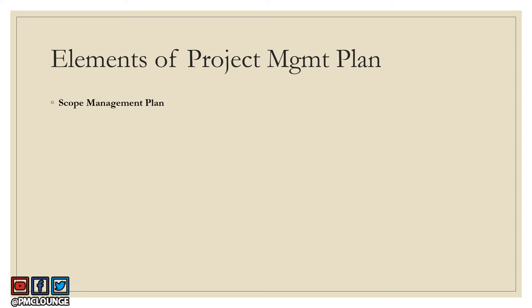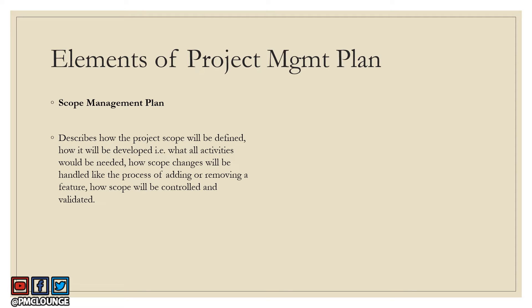Starting with the scope management plan, which is the output of the plan scope management process. This document describes how the project scope will be defined, how it will be developed — meaning what activities would be needed — how scope changes will be handled, like the process of adding or removing a feature, how scope will be controlled, and how it will be validated. Everything around managing scope is present in the scope management plan.